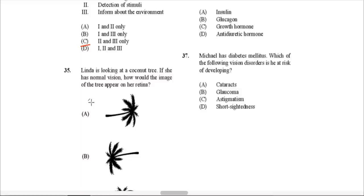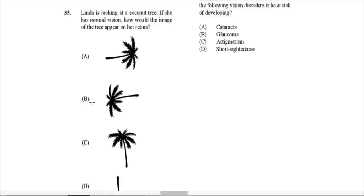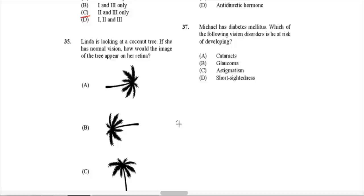Question 35: Linda is looking at a coconut tree. If she has normal vision, how would the image of the tree appear on her retina? The retina has cone cells and rod cells (photoreceptors). When light rays fall on the retina, the information is transmitted to the brain. The image on the retina is actually upside down before it is interpreted by the brain, which puts it right side up. So D — the tree upside down — would be the correct answer.